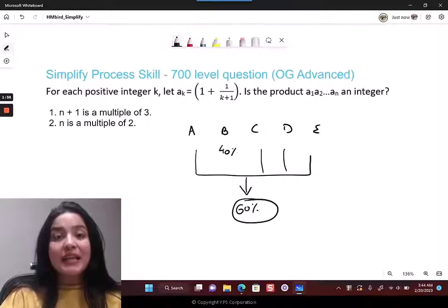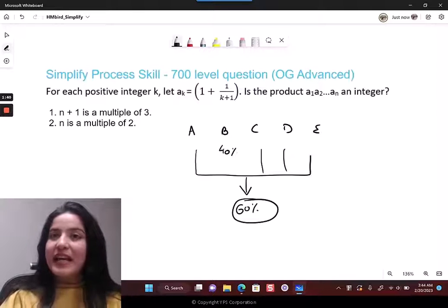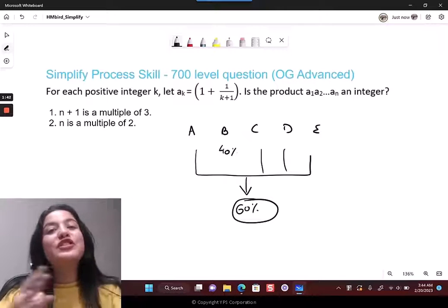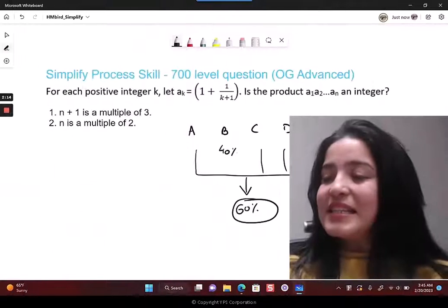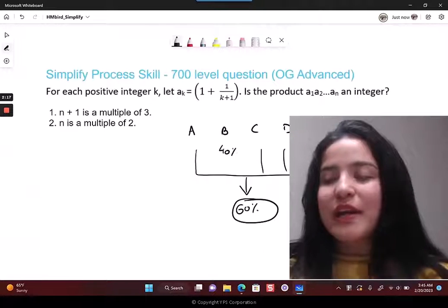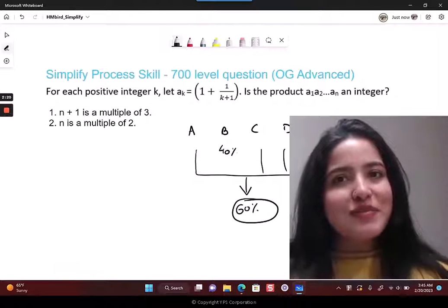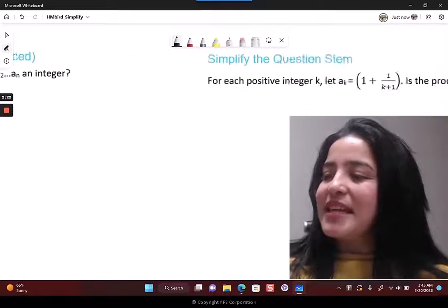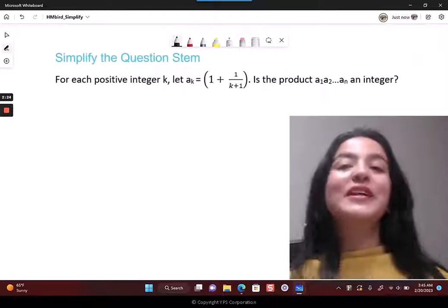The 60% that's getting this wrong - why is that happening? That's a huge percentage. It's because they are unable to simplify things. So let's see how we can simplify this scary looking question and take things back in our control.